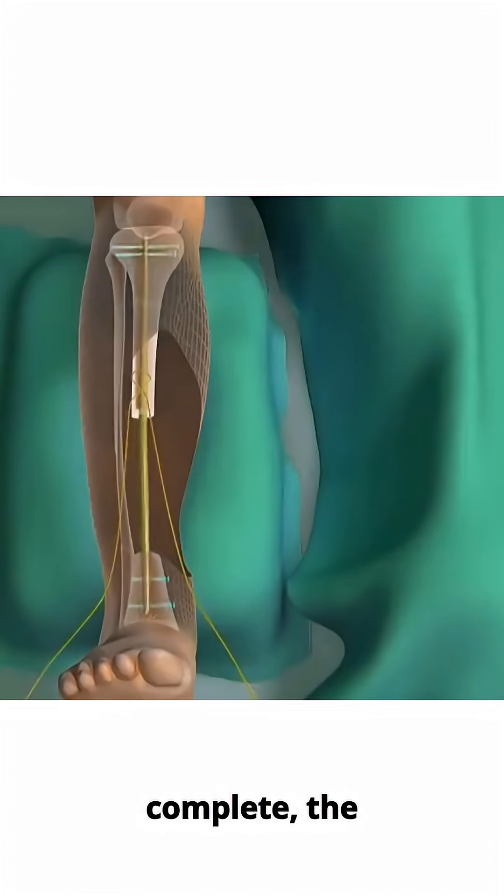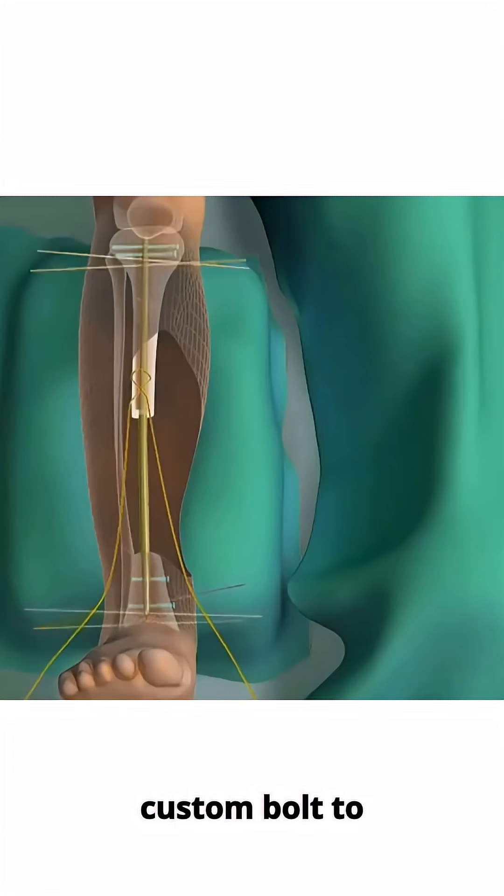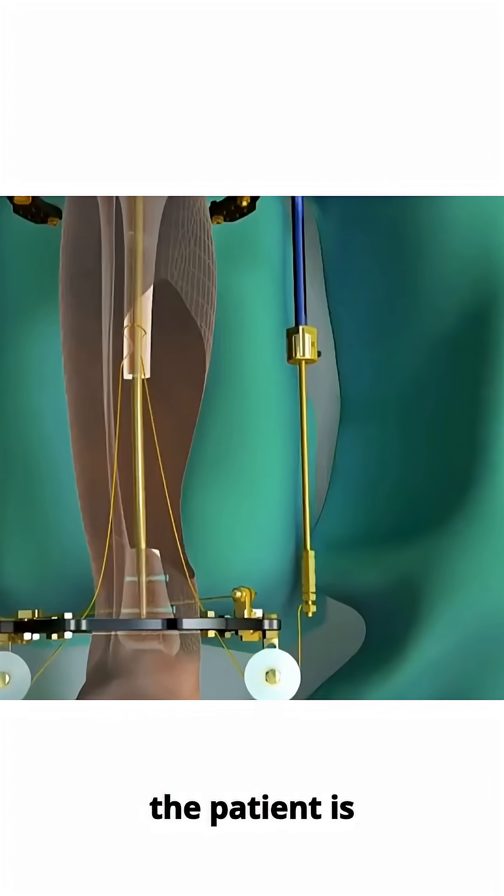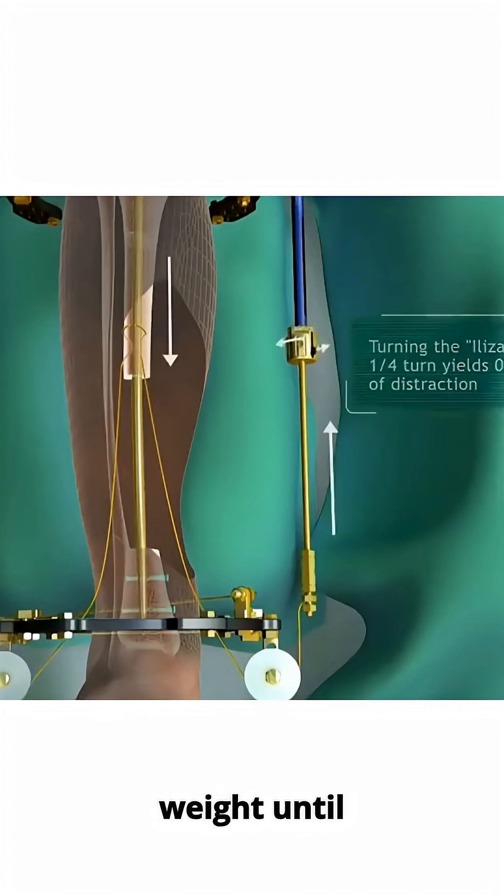Once the lengthening is complete, the bone is secured with a custom bolt to prevent shifting. The frame is removed and the patient is allowed to partially bear weight until fully healed.